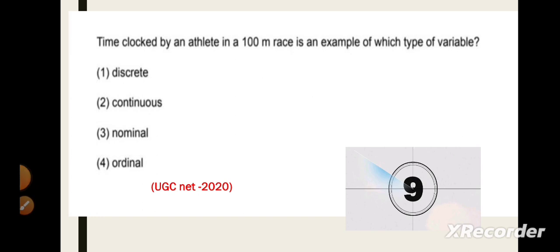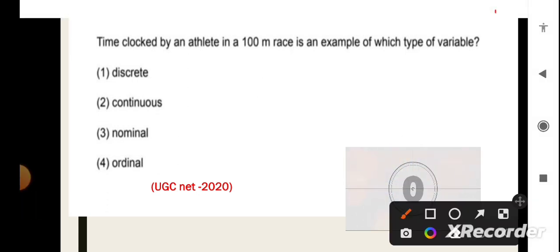I will wait for some seconds so that you can also guess the answer. Now, here the first question is, time clocked by an athlete in a 100 meter race is an example of which type of variable? So, here the correct answer is option second i.e. continuous variable.